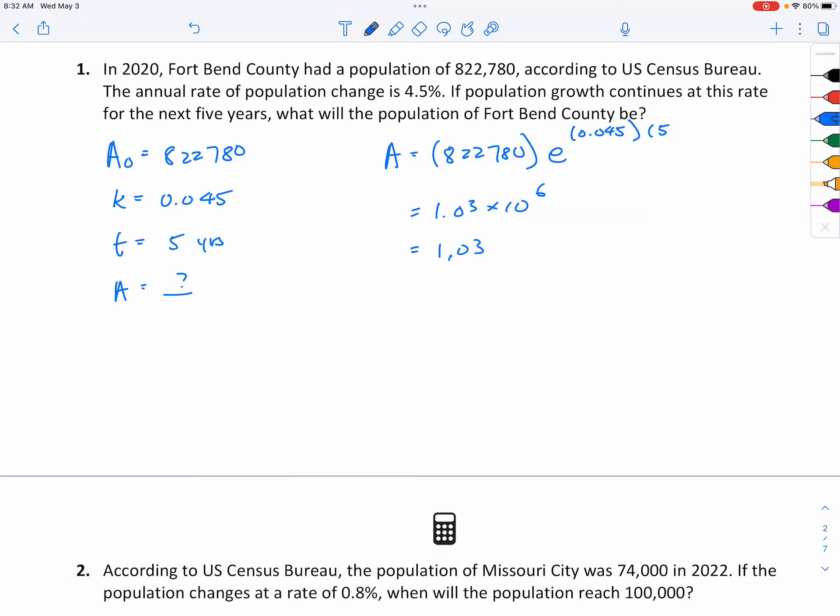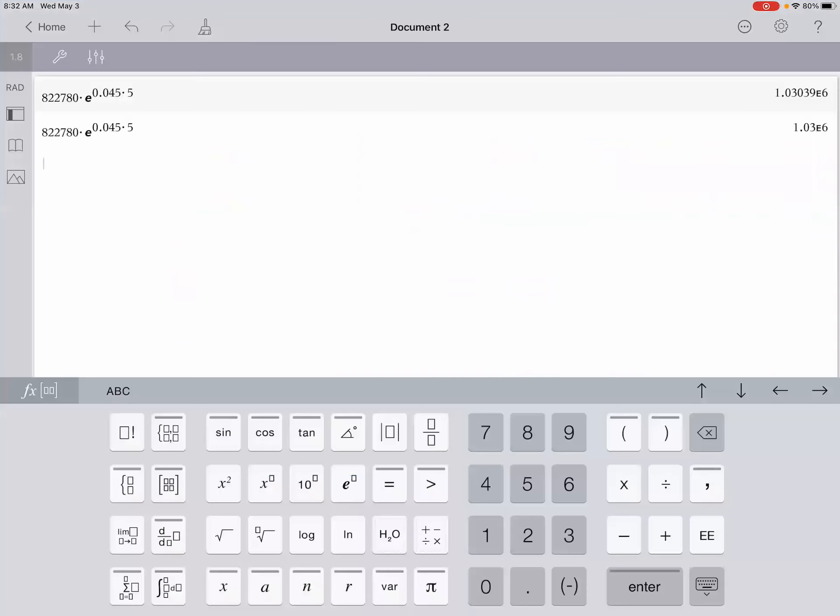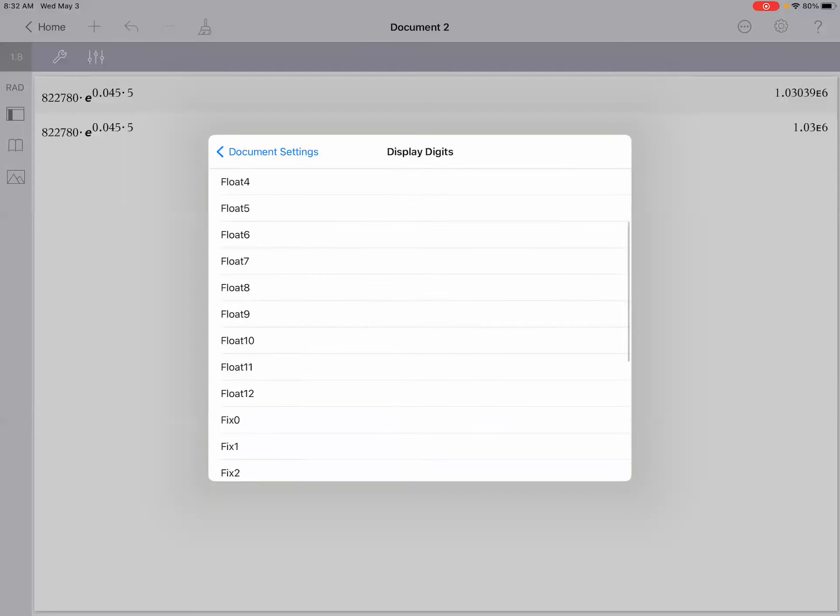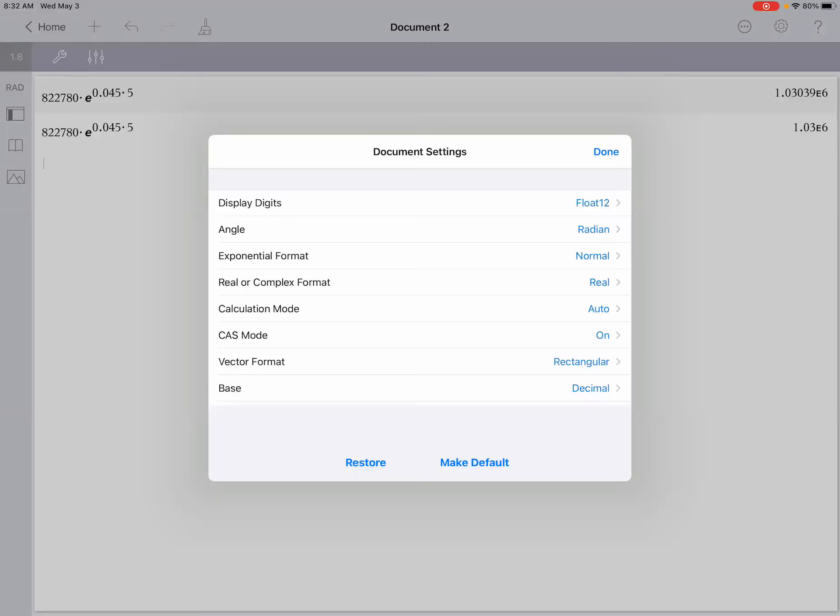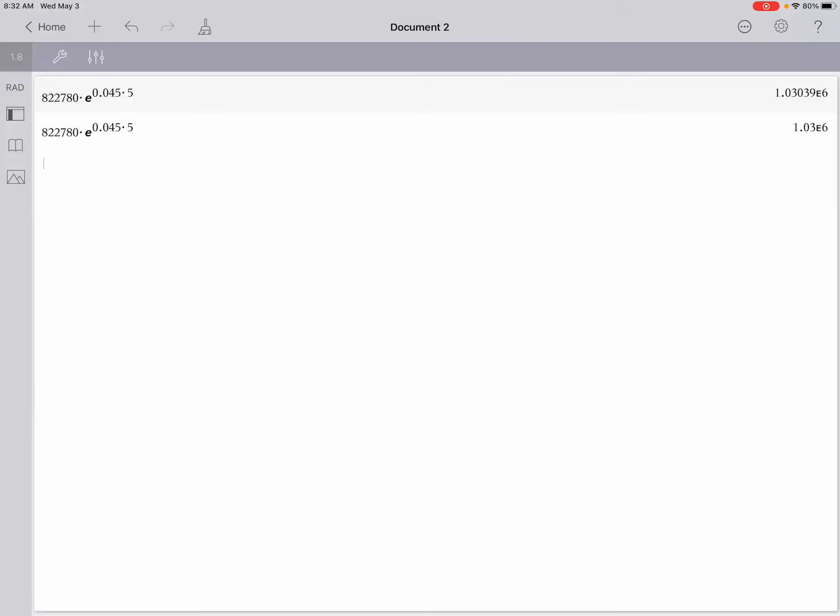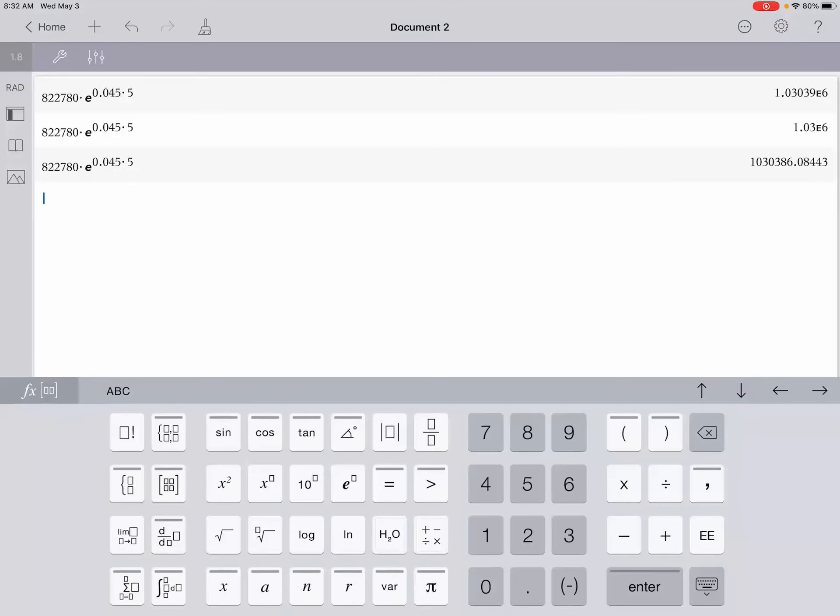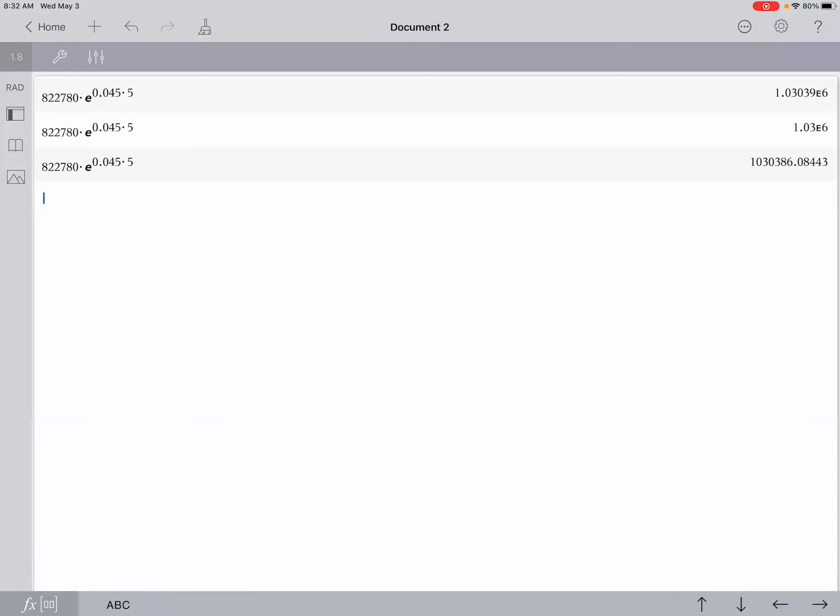If your calculator tells you what all the amounts are, what the digits are. So like this, 1,030,386.